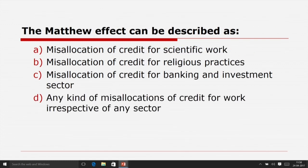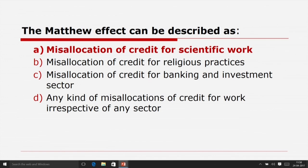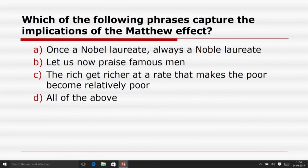The Matthew effect can be described as misallocation of credit for scientific work, misallocation of credit for religious practices, misallocation of credit for banking and investment sector, or any kind of misallocation of credit irrespective of sector. The Matthew effect in science is the misallocation of credit for scientific work — A is correct. Which phrases capture the implications of the Matthew effect? Once a Nobel laureate always a Nobel laureate, let us now praise famous man, the rich get richer at a rate that makes the poor become relatively poor, or all of the above — all of the above.